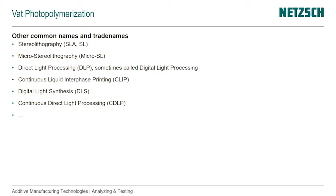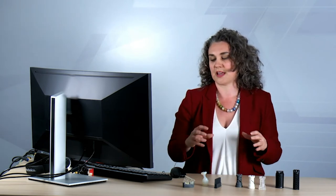VAT photopolymerization I often abbreviate as VAT. There are other common names and trade names for VAT photopolymerization. The original term coined by 3D Systems and Chuck Hull, who invented the process, was stereolithography — SLA or SL. Microstereolithography is used, direct light processing, sometimes also called digital light processing, continuous liquid interface printing, digital light synthesis, continuous direct light processing. These terminologies all refer to the same class of processes: VAT photopolymerization.